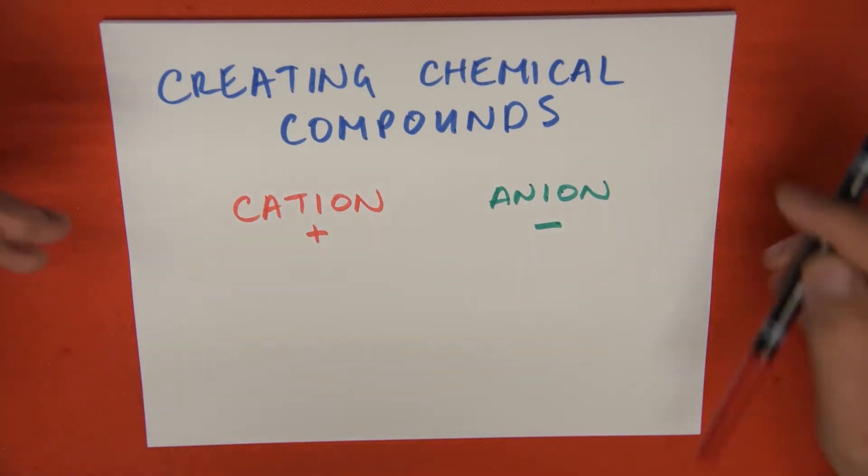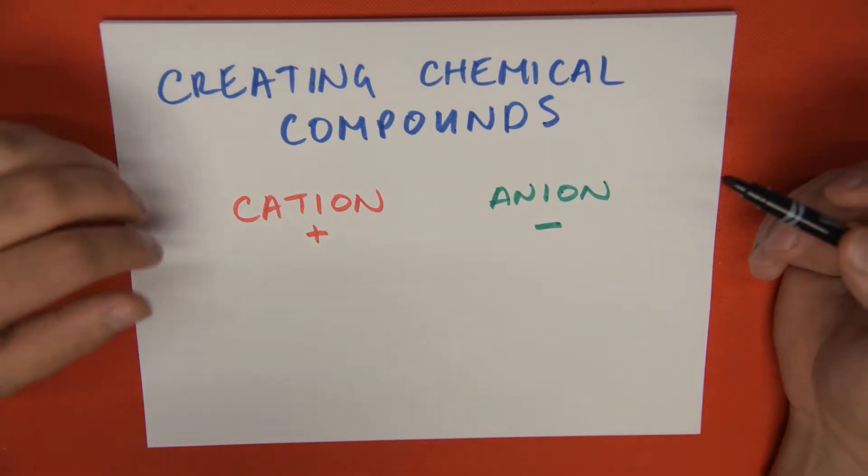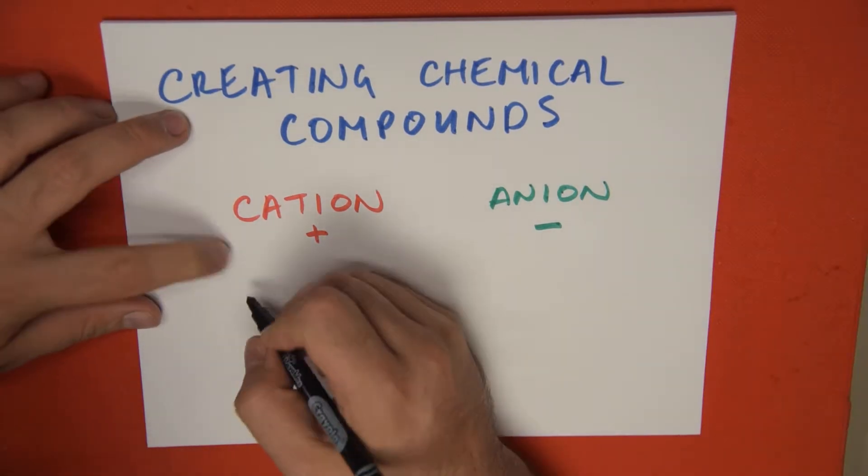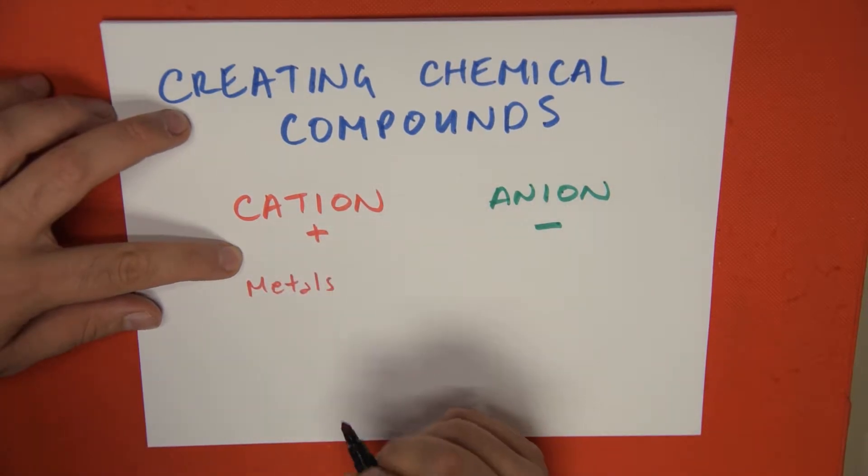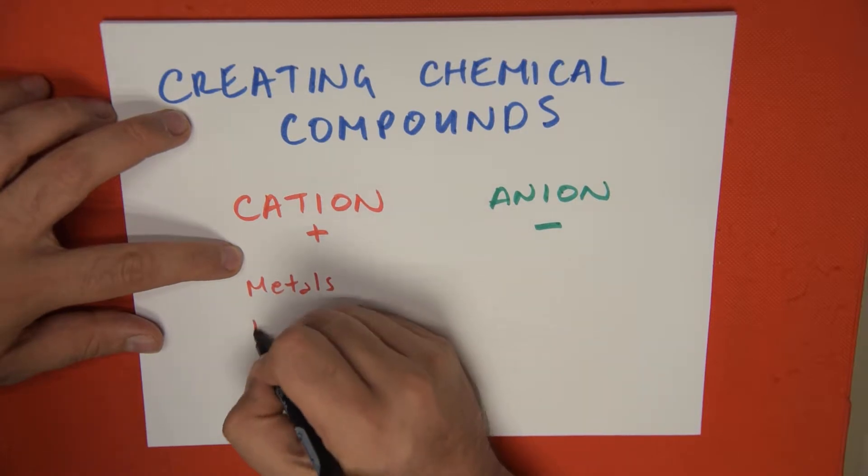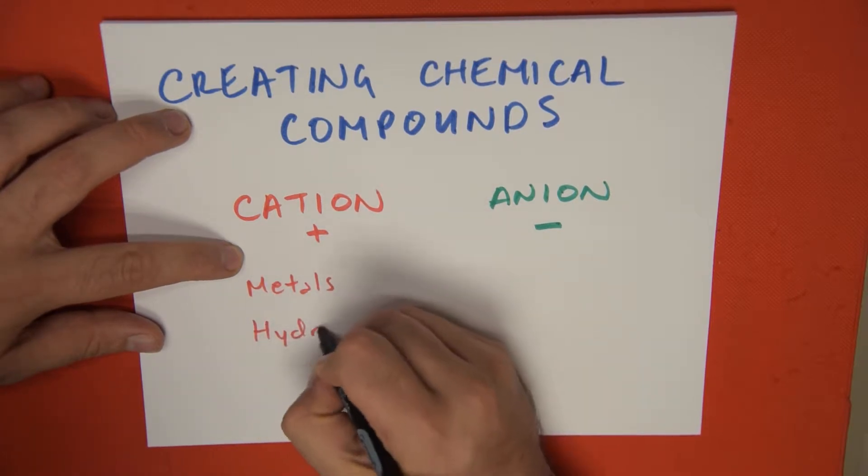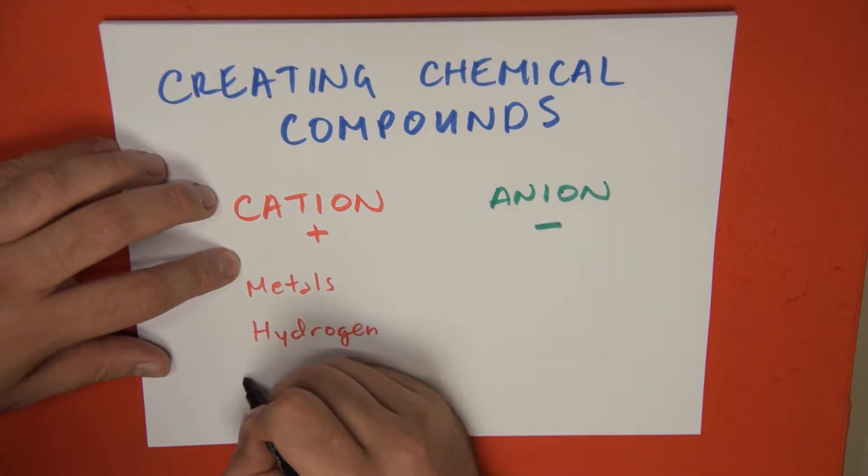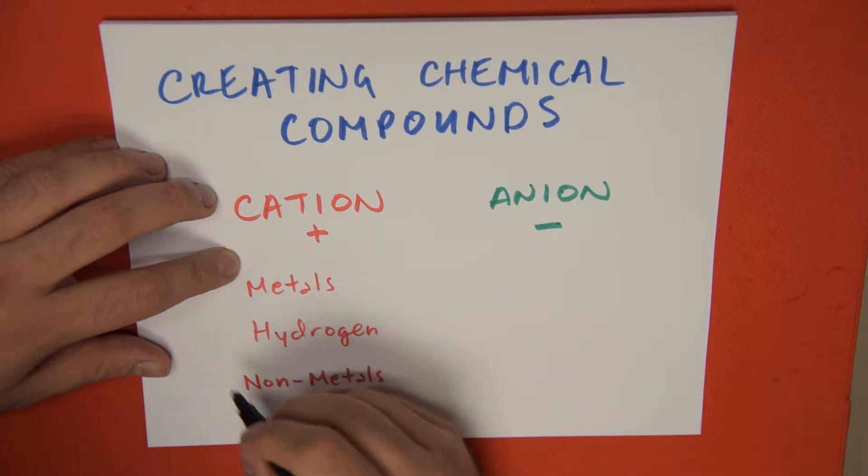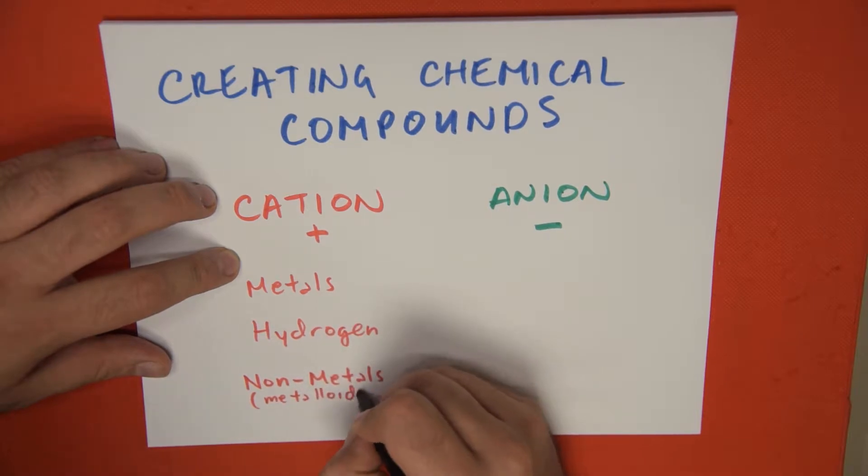When we're speaking about creating chemical compounds, what are some of the common cations associated with creating chemical compounds? I would group them in metals. Another possible cation would be, in general, hydrogen. And another would be non-metals. And for all intents and purposes, non-metals also include metalloids for this category.